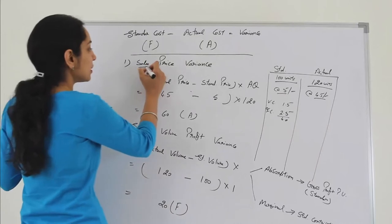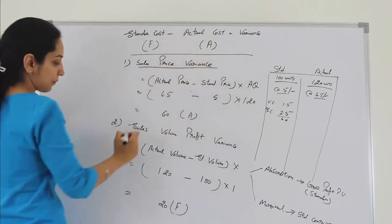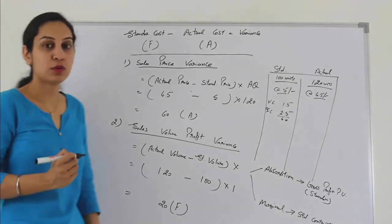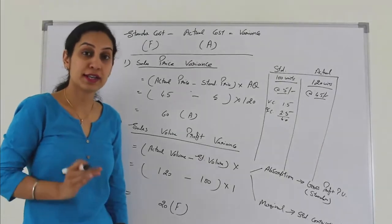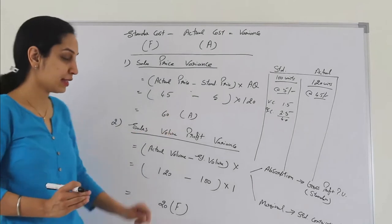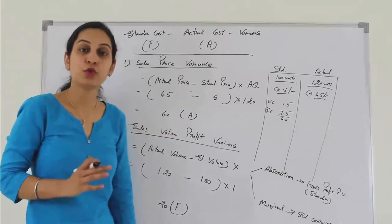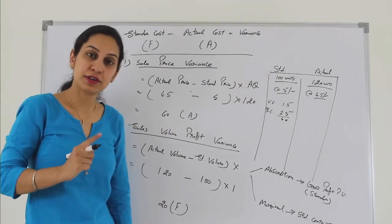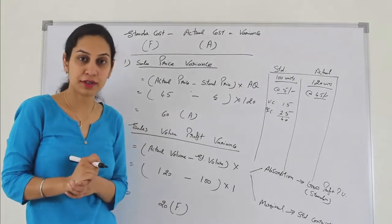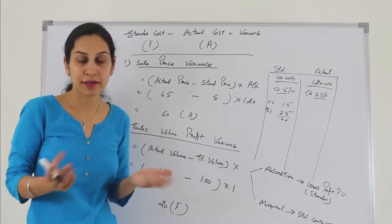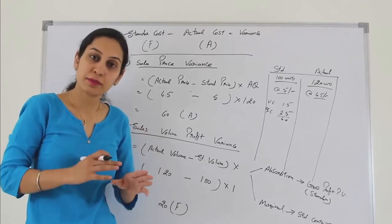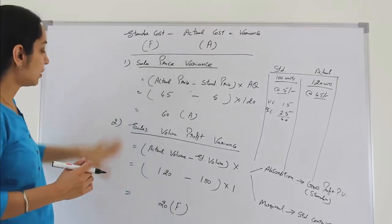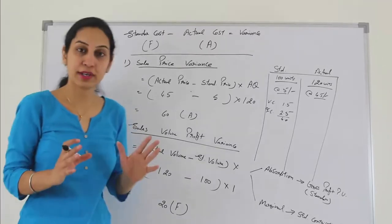So we discussed two types of variance: selling price variance and sales volume profit variance. If you have to calculate total sales variance, please add both the variances and use basic mathematical rules: one adverse and one favorable will be subtracted; both favorable will be added; both adverse will be added and the negative sign will prevail.